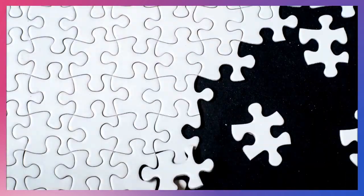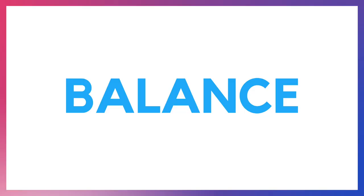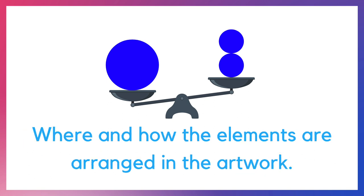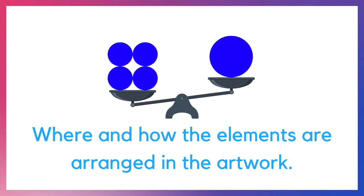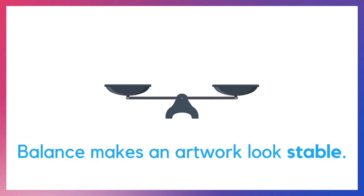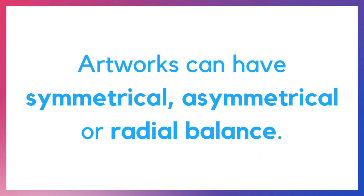Now let's learn a little bit more about the principle of balance. Balance deals with the distribution of the visual weight in a composition. This refers to where and how the elements are arranged within the artwork. Balance makes an artwork look stable.